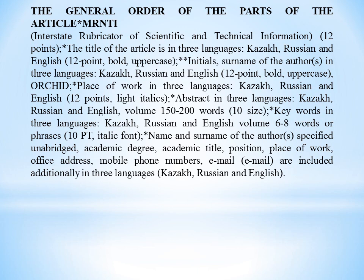Regarding the order of parts of the article: the title of the article should be written in three languages — Kazakh, Russian, and English. The initial surnames of the author should also be written in three languages, as well as the author's place of work. The abstract should also be written in three languages.